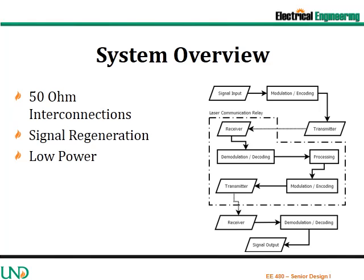The system overview is presented on the right. 50 ohm interconnections will be utilized to connect the receivers and transmitters. The processing section will utilize signal regeneration for frequency modulation, amplitude shift keying, frequency shift keying, and phase shift keying. An automatic gain control circuit will be required to regenerate amplitude modulated signals. High power, high speed devices are currently being utilized during the prototyping phase to allow for exploration of the system's capability without running into device performance issues. Low power devices will be utilized later in the design process.